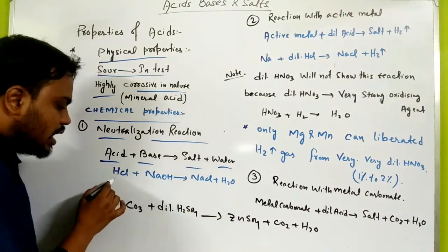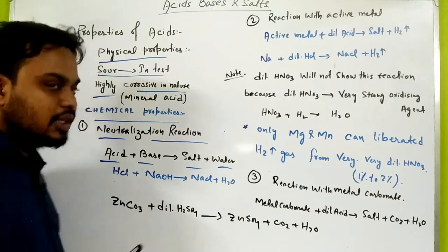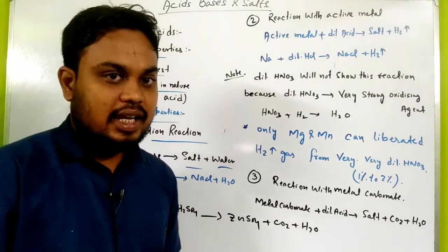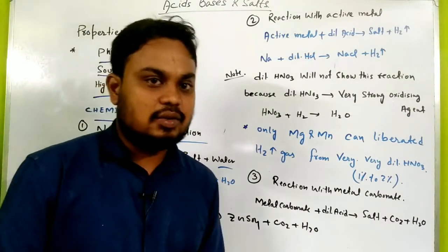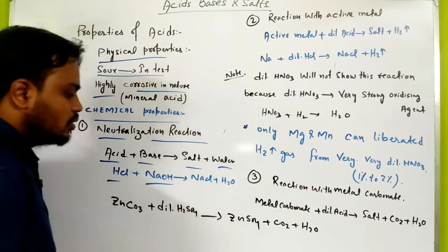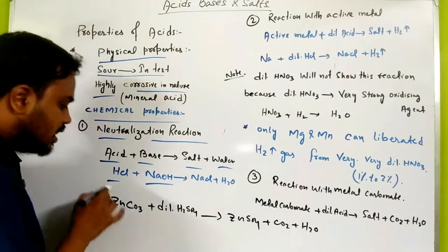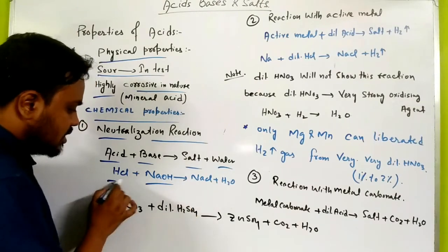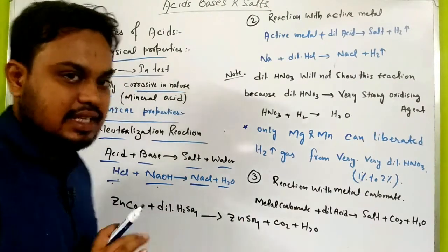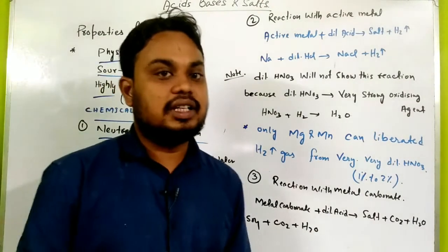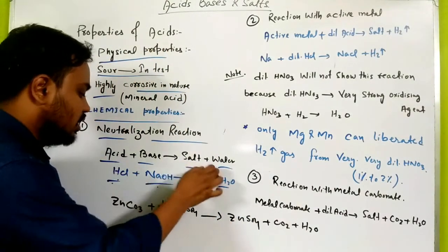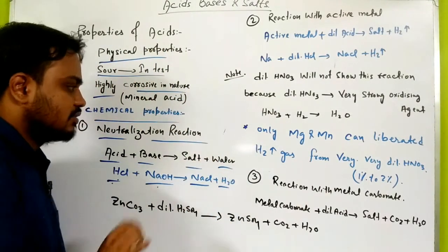No need to write complex acid or base names. Just use simple examples — HCl as acid and NaOH as base. Acid reacts with base to form salt and water. That's enough for this reaction; you don't need to learn anything more than this.